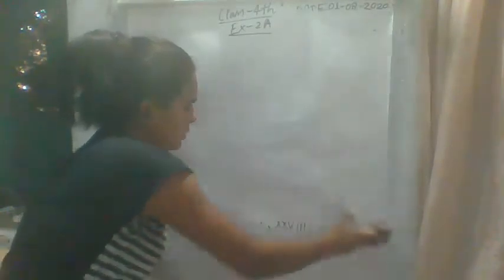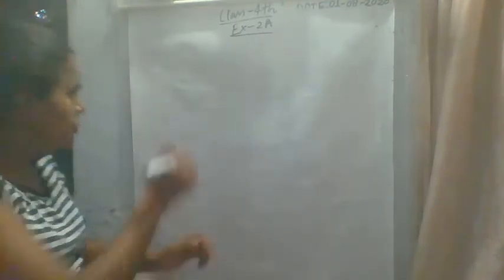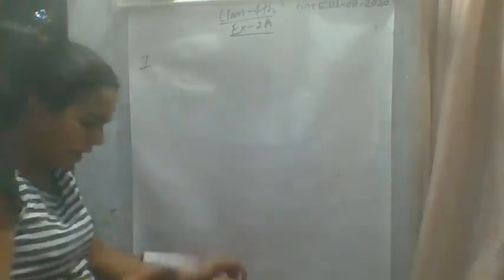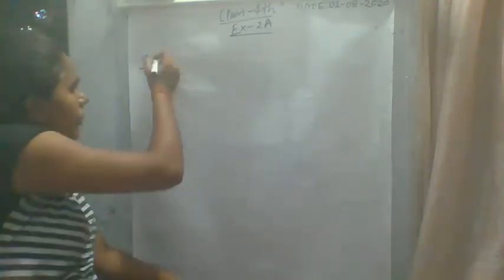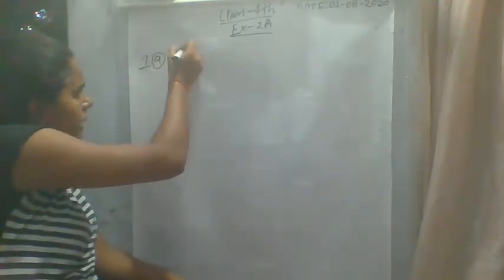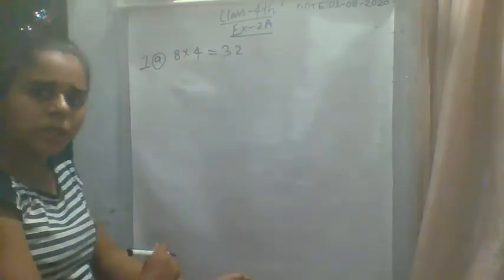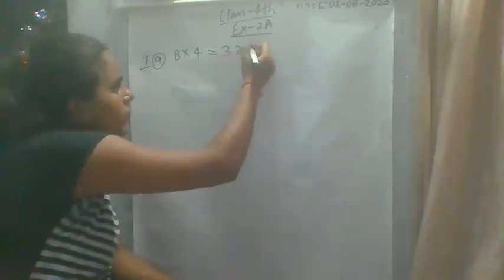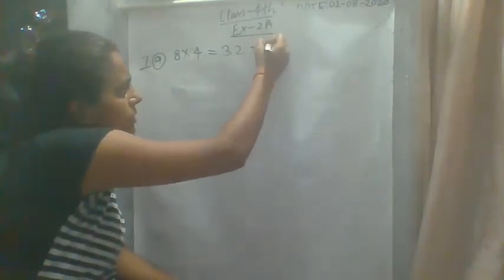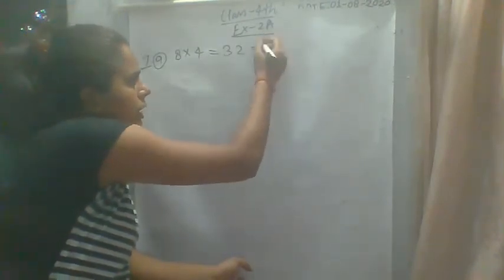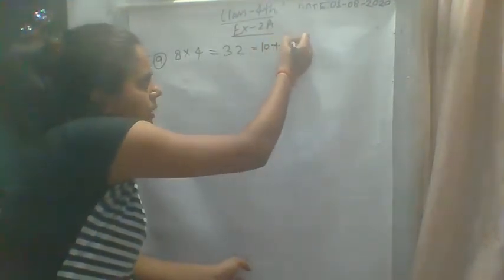How do we do question number 7? Question number 7 is to write the answers in Roman numbers. What is a? 32: 10 plus 10 plus 10 plus 2.